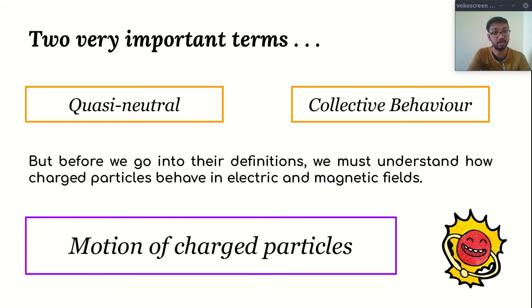For example, electric field, magnetic field, in earth's gravitational field. So, we will first understand how particle behaves in different conditions. Then it would be easy to understand these two technical terms.